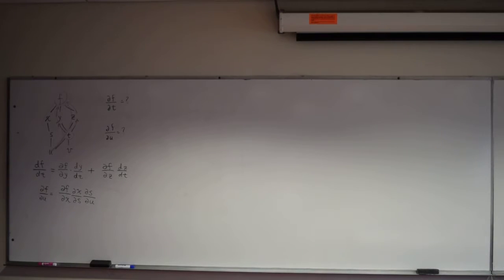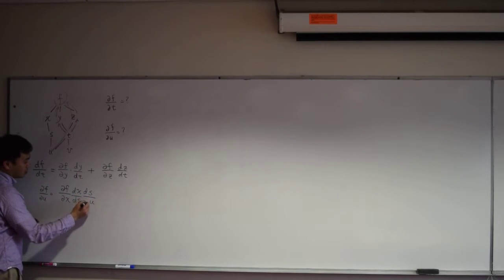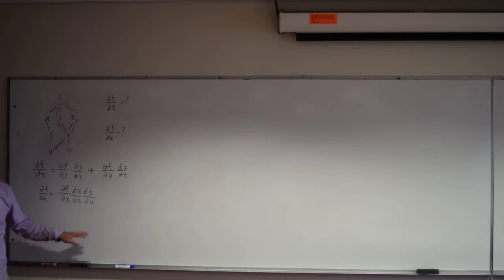You have u changing the value of s, s changing the value of x, x changing the value of f. So this measures how u changes f. By the way, I should really write this as d because x is a function of a single variable, and also s is a function of a single variable. But I'm not going to make a big deal out of it if you write down ∂. That should still be considered as the correct answer, especially because at this level you have both u and v.